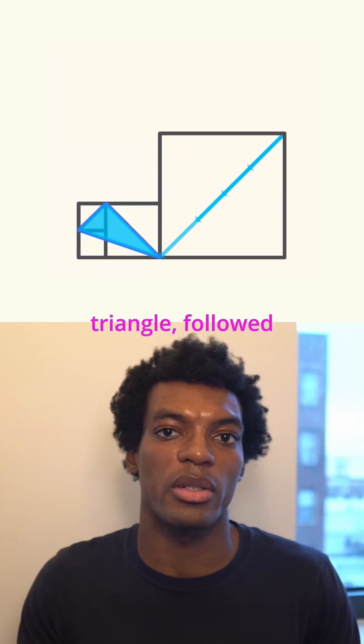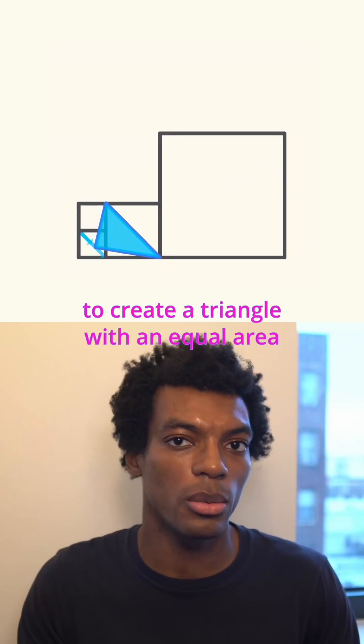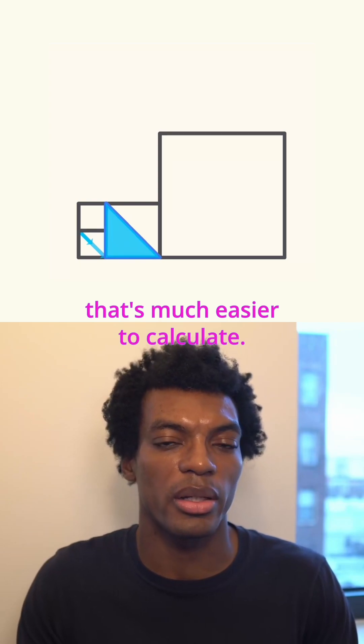We can shear the top right point of the triangle, followed by the leftmost point, to create a triangle with an equal area that's much easier to calculate.